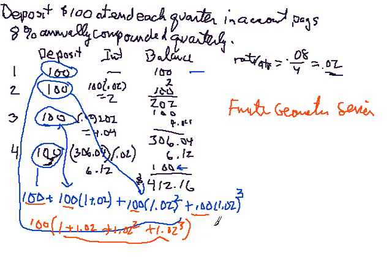And so the value of that series is going to be 100 times what? This expression becomes 1.02 to the fourth power. I have to add 1 to the 3 here. Minus 1 divided by 1.02 minus 1.